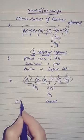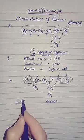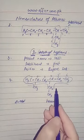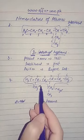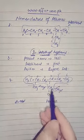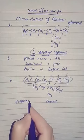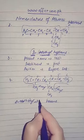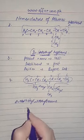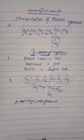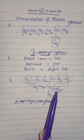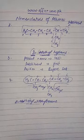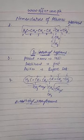The naming will be according to alphabetical order. This is an ethyl group and this is a methyl group. Since E comes before M, it will be named 4-ethyl-2-methylhexane. First, you locate the longest carbon chain, then you number it, and then the naming is done according to alphabetical order. Now let us discuss some more rules.